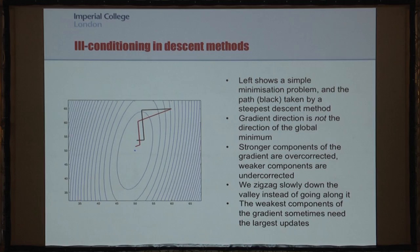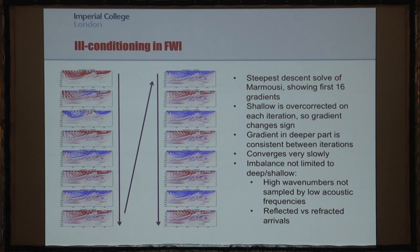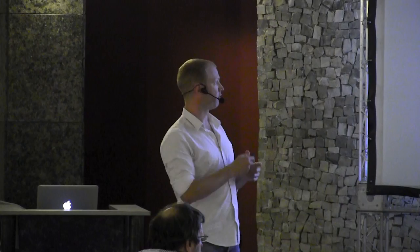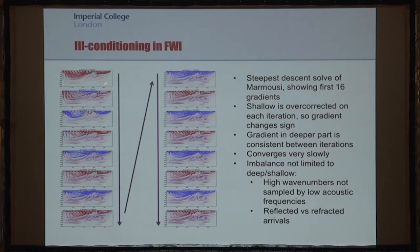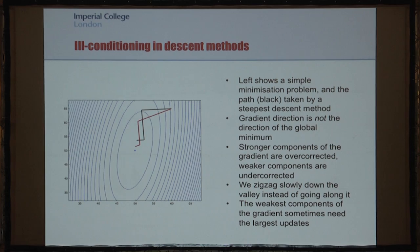We can see this in FWI by looking at successive gradients as we iterate. This is a very simple inversion of a smooth Marmousi model, and standing from a long way away, each gradient seems to be the opposite sign of the one before. That's actually only true in the shallow — the deeper part of the gradient is actually consistent between iterations. This is quite analogous to zigzagging down the valley: the shallower part of the model affects the functional much more quickly than the deeper part, and so we tend to overcorrect it on every iteration.